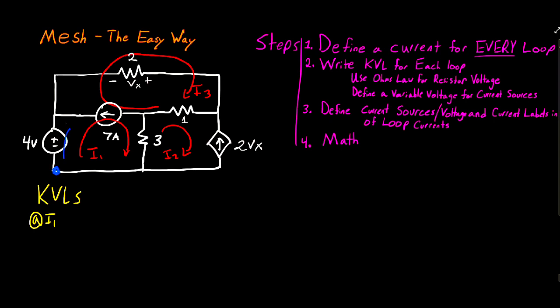Starting the I1 loop, the first component we see is this 4-volt source, and we're going to call this a negative 4-volt potential. The reason we're calling it negative 4 volts is because the current sees that negative terminal first. When we see a positive terminal, we're going to write positive. Being consistent about which way you define the voltage drop across your components is very important. Some books and videos recommend doing it the opposite way, and if you are completely consistent, the answers will work out just fine.